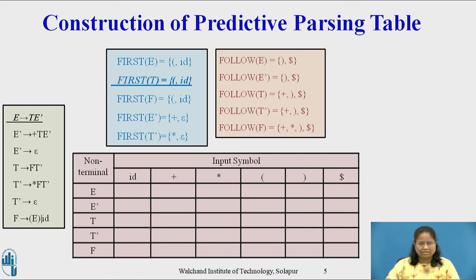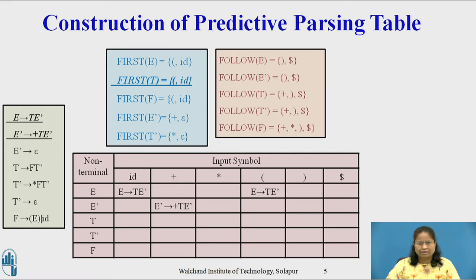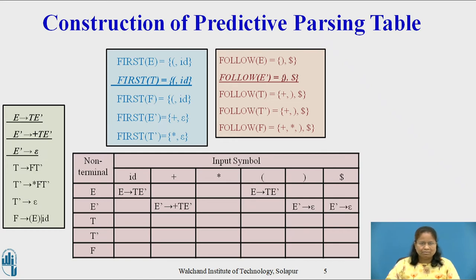Since the First of capital T E-dash equals First of capital T equals {left parenthesis, id}, to acquire the entry, capital E derives capital T E-dash. Production capital E-dash derives plus capital T E-dash causes the First of capital T E-dash equals {plus}. Production E-dash derives epsilon causes First of capital F equals {left parenthesis, id} to acquire the entry capital E-dash derives epsilon.